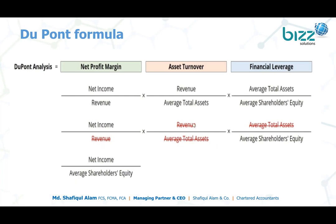If you cross out the revenue and revenue terms, and similarly the average total asset terms cancel, you are ultimately left with net income divided by average shareholders' equity. This is the DuPont formula's final answer.